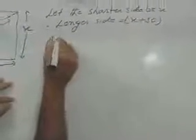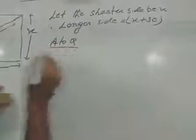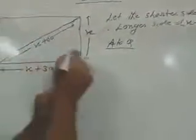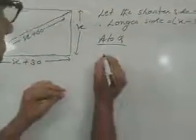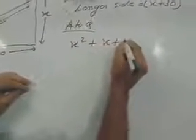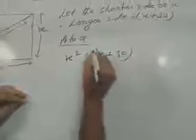According to question, you see, it is a right angle triangle, because this angle is 90 degree. This is the hypotenuse and this is the other two sides. So, p square plus b square is equal to h square. Which rule? According to Pythagoras theorem.